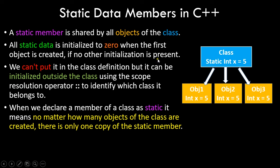You can't initialize a static data member inside the class definition, but it can be initialized outside the class using the scope resolution operator — two colons — to identify which class it belongs to. When you declare a member as static, no matter how many objects are created, there is only one copy of that static member.